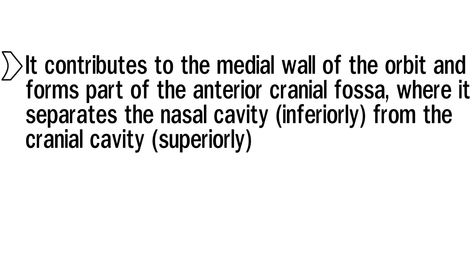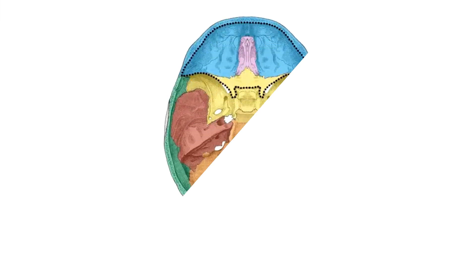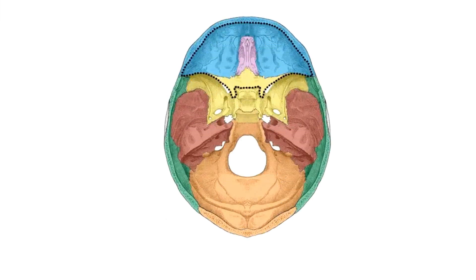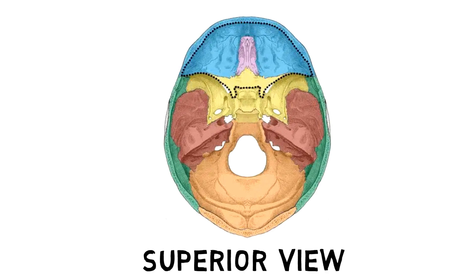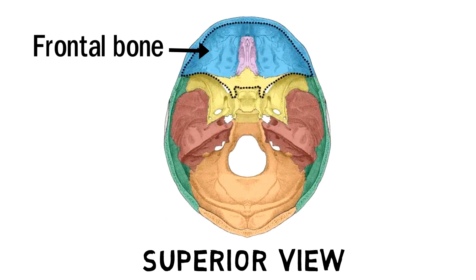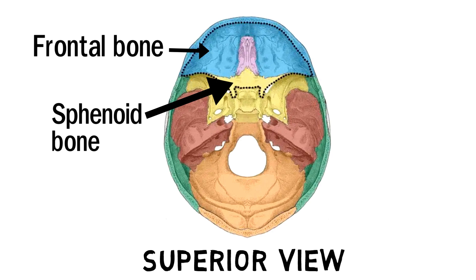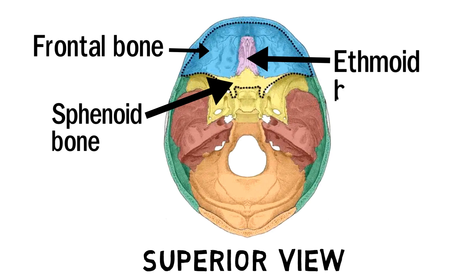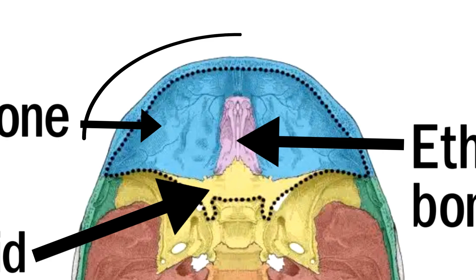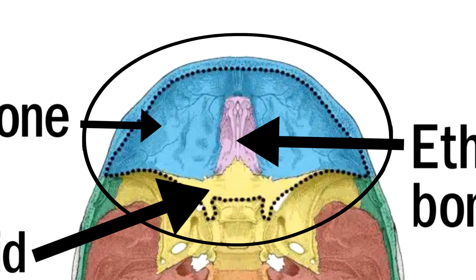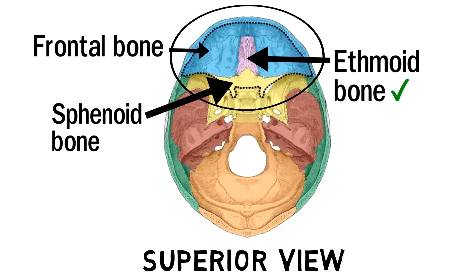Let's see how it forms a part of the anterior cranial fossa. This is the superior view of the base of skull. This bone shaded in blue is the frontal bone, this bone in yellow is the sphenoid bone, and this purple shaded bone is the ethmoid bone. The black outlined part is what is called the anterior cranial fossa, and these three bones take part in the formation of this fossa.